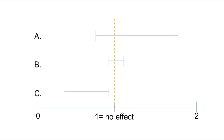Now let's look at these 95% confidence interval examples. Which of these confidence intervals is or are statistically significant? Which is the most precise? If the confidence interval does not cross the null value — in this case 1.0 because we're talking about a ratio measure — then it is statistically significant. Of the examples listed, A, B, and C, C is statistically significant because it does not cross the null value, while A and B do. B is a more precise confidence interval compared with A and C.